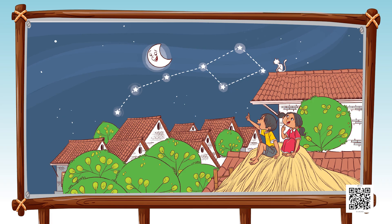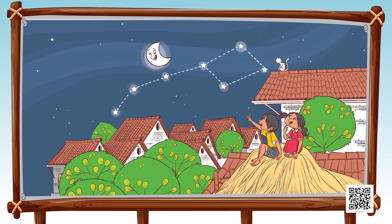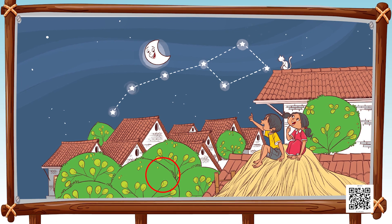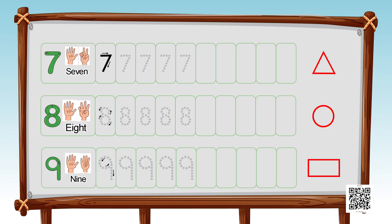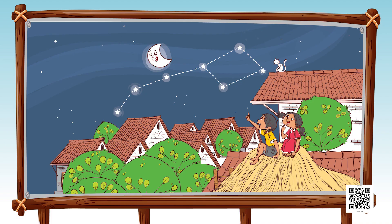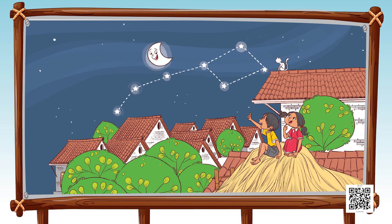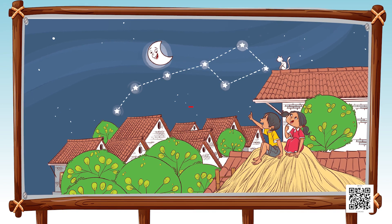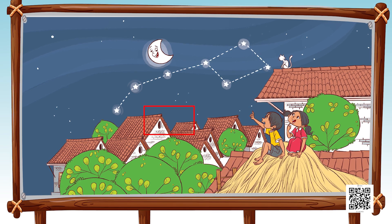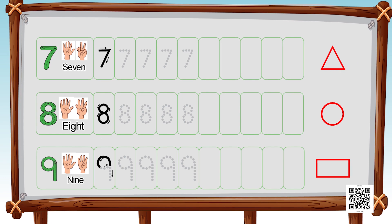Next, draw a circle around the objects which are eight in number. Try to find out the objects which are eight in number, draw a circle around them, and write down eight on your sheets — this is what eight looks like on the screen. Then draw a rectangle around the objects which are nine in number. Find what objects in the picture are nine in number, draw the rectangle, and write down the number nine as shown on the screen.